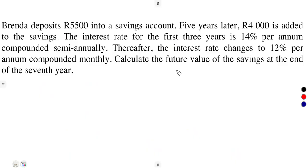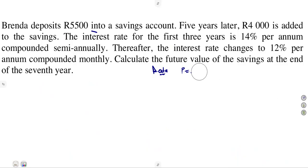We are given that Brenda deposits $5,500 into a savings account. So there is a deposit of $5,500, which is our principal — $5,500.